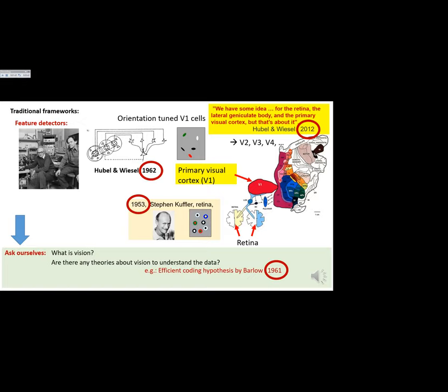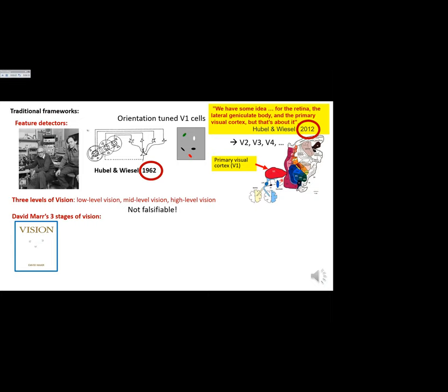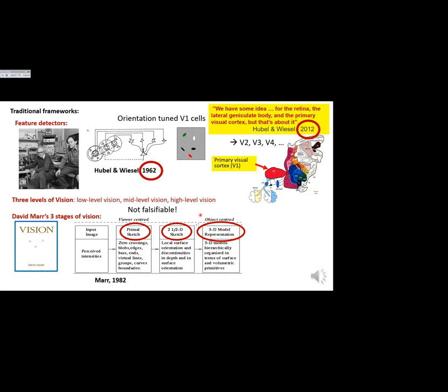Another framework tries to look at vision at three levels — low, mid, high — but one of the most important problems is this framework is not falsifiable. You can never say it's wrong, and if it's not falsifiable it's not precise enough to be tested. David Marr did put himself up to be tested, proposing primal sketch, 2.5D sketch, and 3D model — but that was 1982, and it would not have drawn ongoing criticism if it had succeeded.